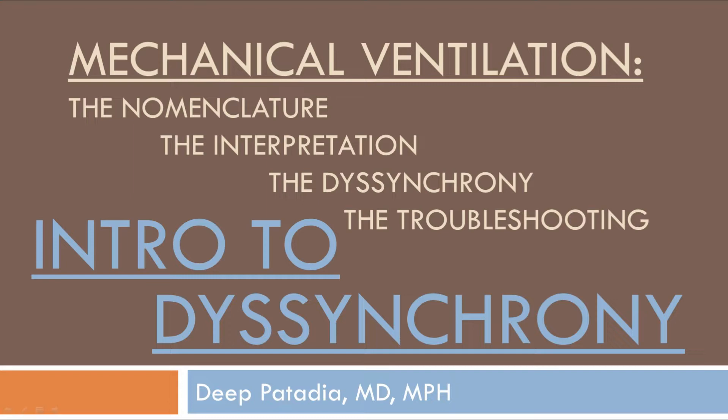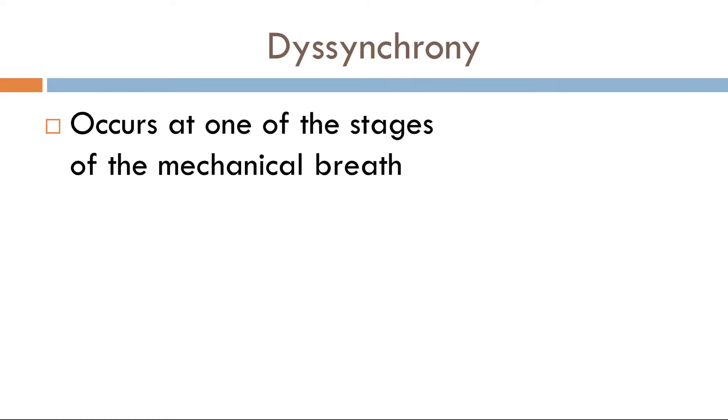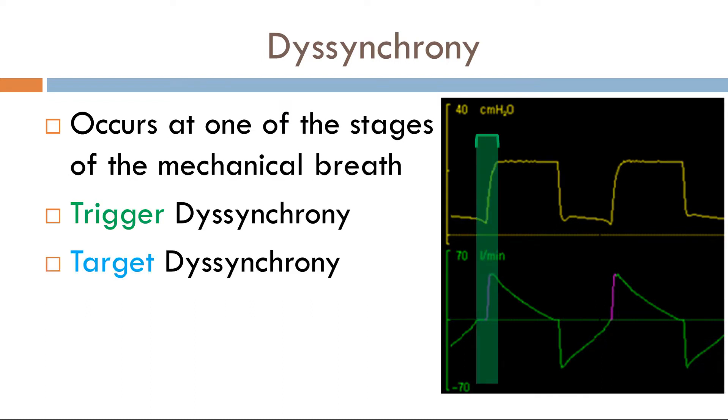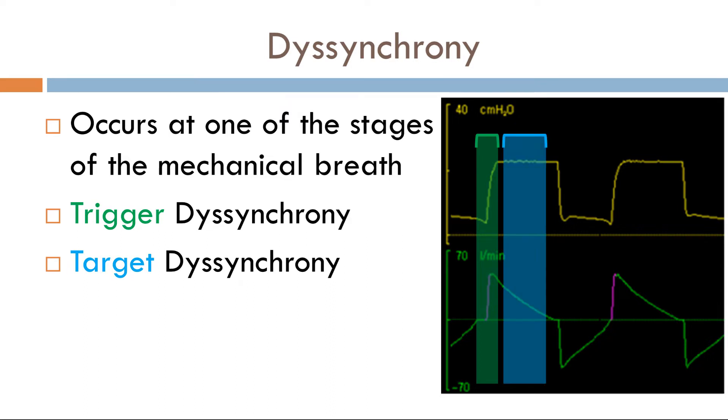Otherwise, let's start with the introduction to Dysynchrony. Now Dysynchrony occurs at one of the stages of the mechanical breath. So if you have triggered Dysynchrony, it occurs here. If you have target Dysynchrony, it occurs here. And if you have cycle Dysynchrony, it occurs here. Each of these three Dysynchronies have a subset of Dysynchronies associated with them. So if you can identify which phase the Dysynchrony is occurring, that will narrow the differential and ultimately impact your management. So it's crucial to identify which phase the Dysynchrony is occurring.